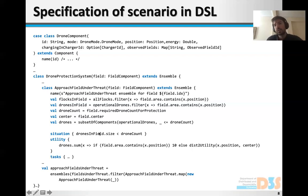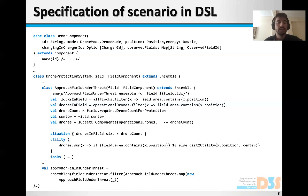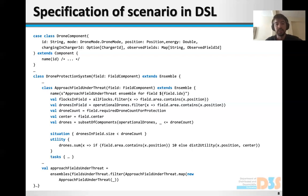Another concept that we use is that of the utility, which models the optimization problem that we want to solve. In this case, we would like to select the drones that are closer to the field. This is what is being modeled in a rather complex way in this line.